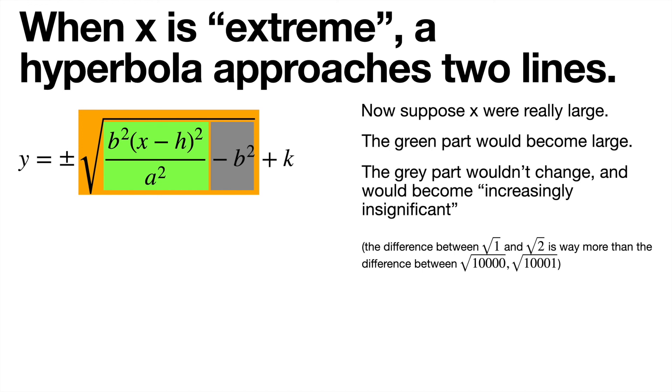But the gray part, the negative b squared, wouldn't change and would become increasingly insignificant. So even though that part's going to be the same every time, the square root, when you'd have square roots of numbers, a difference of one in the square root is going to be less and less significant. So for example, square root of one is further away from the square root of two than the square root of 10,000 is away from the 10,001. And what that means is that when x is large, we can basically ignore the b squared, basically ignore the gray term.